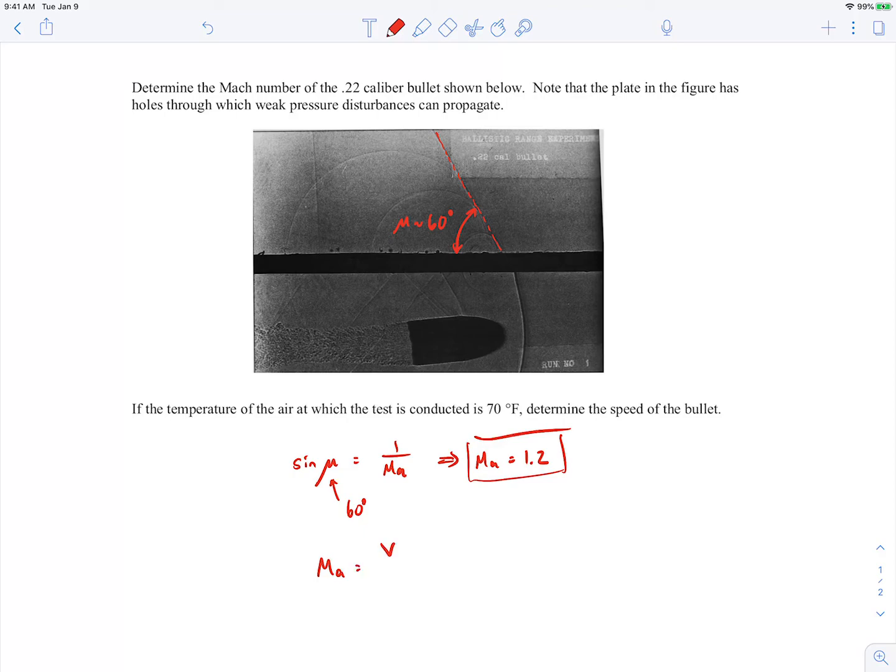The Mach number is the velocity divided by the speed of sound, where the speed of sound for an ideal gas is going to be square root of the specific heat ratio k times the gas constant r times the absolute temperature t.